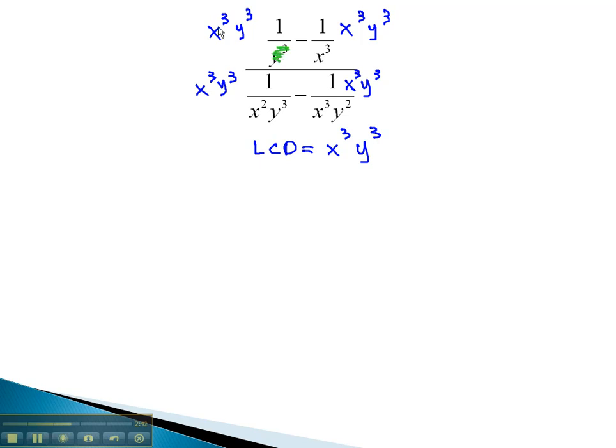In the numerator, the y cubed divides out with the y cubed, x cubed with the x cubed. In the denominator, y cubed with y cubed, and x squared, dividing out two x's, leaves one x behind.